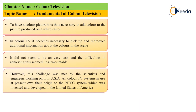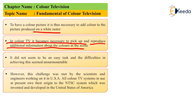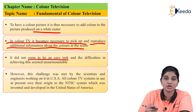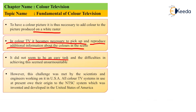It is necessary to reproduce the color on the white rasters, so in color television it becomes necessary to pick up and reproduce the additional information about the colors in the scene. This did not seem to be an easy task and the difficulties seemed almost impossible, but the challenge was accepted by scientists and engineers in the USA. All color television systems used today stem from the NTSC system — the National Television System Committee — which was developed in the United States of America.